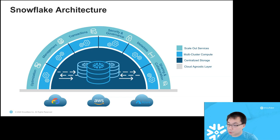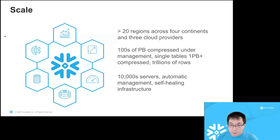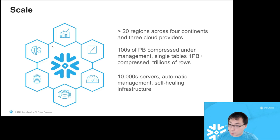In the US, AWS pretty much dominates, although for companies that are competitors to Amazon, they usually prefer Microsoft — there are very large companies that prefer Microsoft because of that. Snowflake has deployments in over 20 regions across four continents and all three cloud providers, with hundreds of petabytes of data under management. We have single tables with compressed sizes in the petabytes range and trillions of rows in a single table, and we manage a fleet of tens of thousands of servers in each deployment where the infrastructure is highly automatic, elastic, and self-healing.